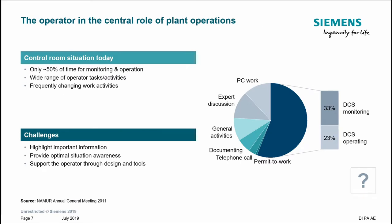What does the operator actually do and how much time is available in the day for operating the system? This next slide is from NAMUR, who did a survey of a typical operator's day. Only 56% of their time is spent in front of the DCS monitors, and only 23% is actually spent controlling the plant. The modern operator has to do other tasks such as PC admin and expert discussions, so we want to optimize the information they see on screen.